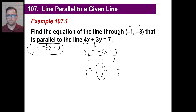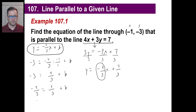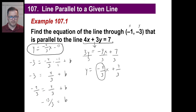Only thing we need to find is b. There's an x and there's a y, so we write them in. Y is negative 3. Negative 3 equals negative 4 over 3 times negative 1 over 1, plus b. A negative times a negative is positive, so we have 4 thirds plus b. Rewriting negative 3 as negative 9 over 3: negative 9 over 3 minus 4 over 3 is negative 13 over 3. That equals b. We've found the equation of the line parallel to that line and passing through that point.